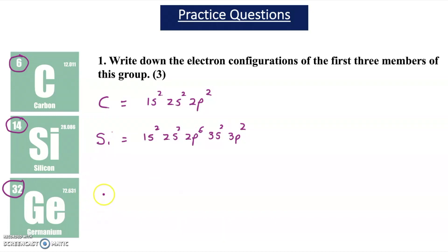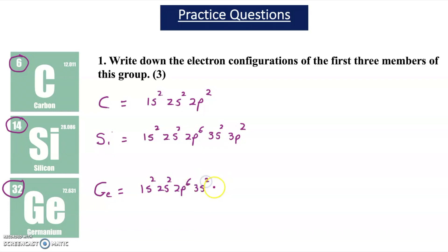Germanium is atomic number 32. Its electron arrangement is 1s², 2s², 2p⁶, 3s², 3p⁶, then you have to remember that the 4s fills before the 3d, so it's 4s², then 3d¹⁰, and then 4p². Germanium is in period four because the outer shell is the fourth shell.